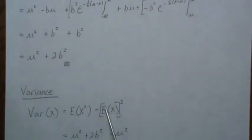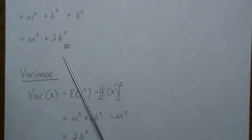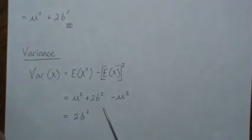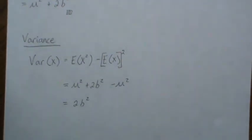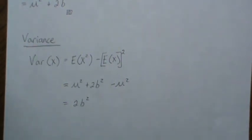To calculate the variance, we use the formula: Var(X) equals E[X squared] minus mu squared. We plug in our second moment, the mu squared terms cancel, and we're left with two b squared. That's the variance for a double exponential distribution, also called the Laplace distribution. I hope you enjoyed it — if you did, please like and subscribe so you don't miss the next one. Thanks, bye.